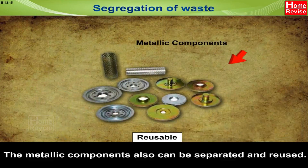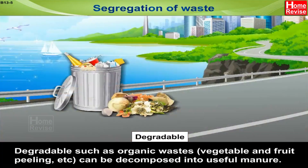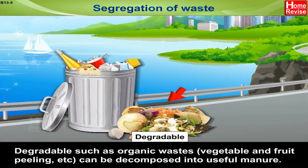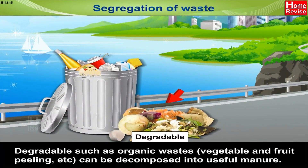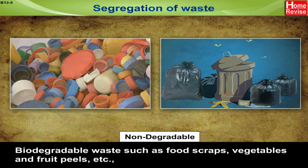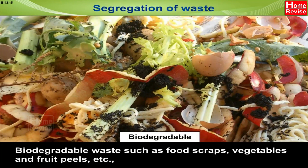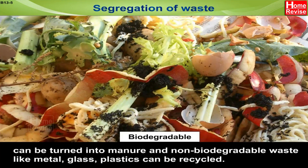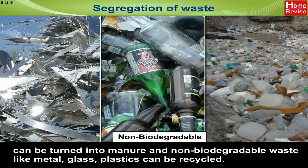The metallic components also can be separated and reused. Degradable waste, such as organic waste like vegetables and fruit peeling, can be decomposed into useful manure. Non-degradable parts, such as certain plastics, can be dumped. Biodegradable waste such as food scraps, vegetable and fruit peels can be turned into manure, and non-biodegradable waste like metal, glass and plastics can be recycled.